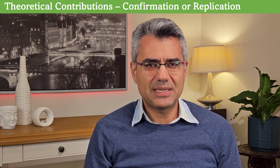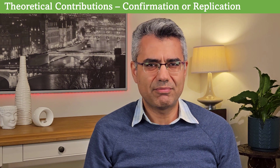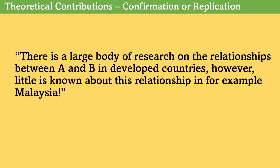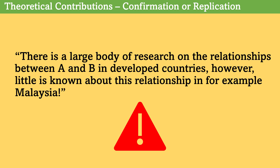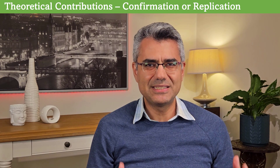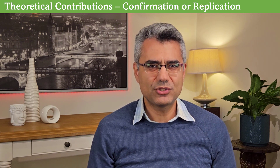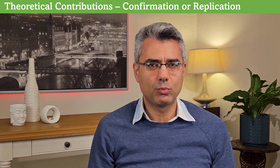For example, researchers claim that few studies or no studies have been conducted in that context. Or they state there is a large body of research on the relationships between A and B in developed countries; however, little is known about this relationship in, for example, Malaysia. But this is not a very convincing justification for allocating resources to do research. We need to explain what makes this context — in this example, Malaysia — unique from the lens of the relationships or the theory that we want to test.